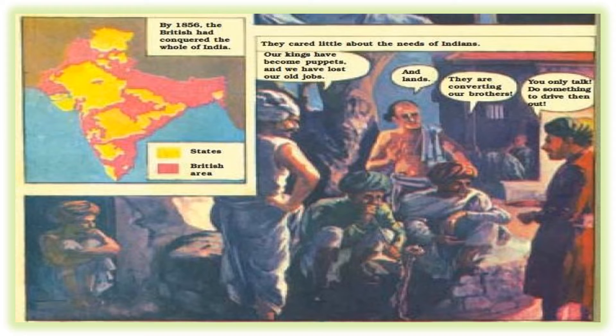A pandit says they have also lost their lands — the Britishers captured their lands through different policies. Another man says: 'They are converting our brothers.' The Britishers were forcing Indian brothers and sisters to leave their original religion and become Christian. Then one more man says: 'You only talk — do something to drive them out.' They should not only talk about all this, but should do something to drive the Britishers out of their country.